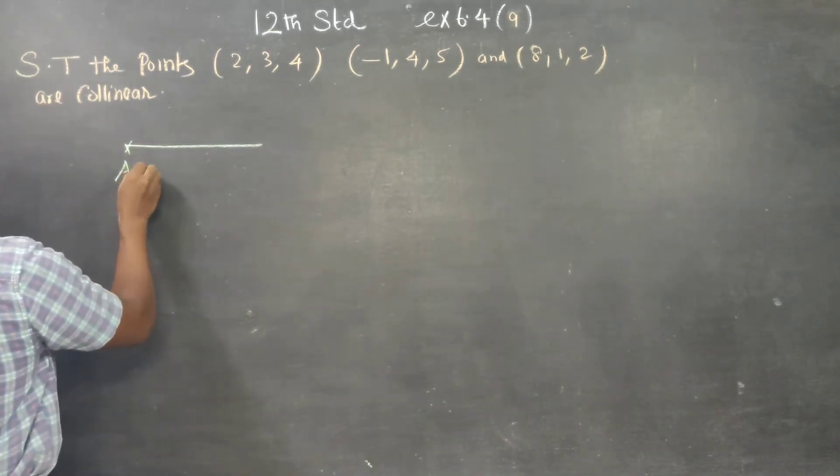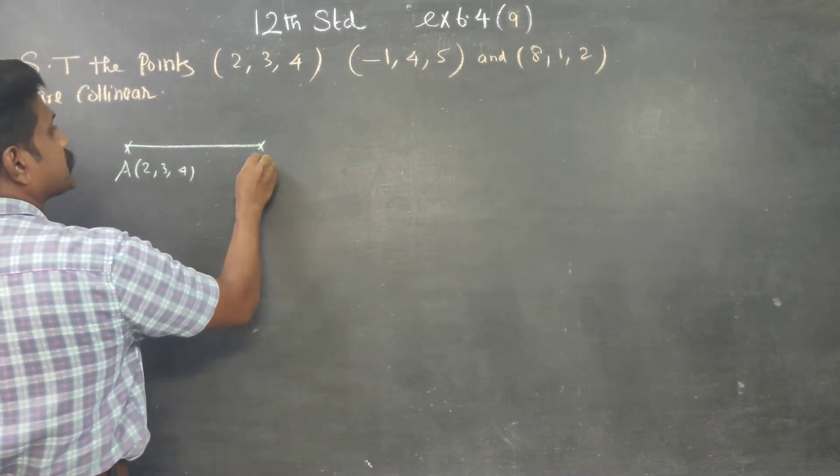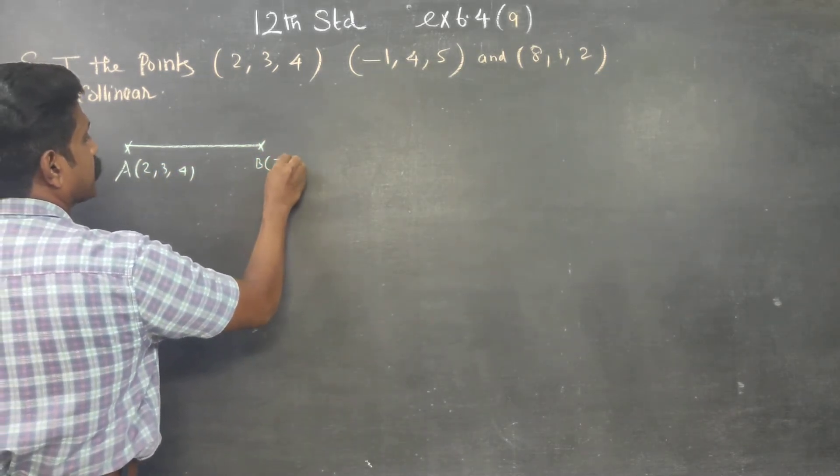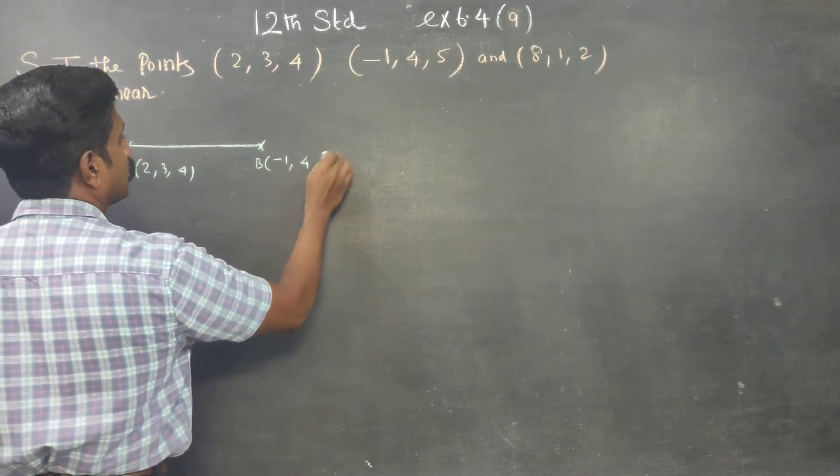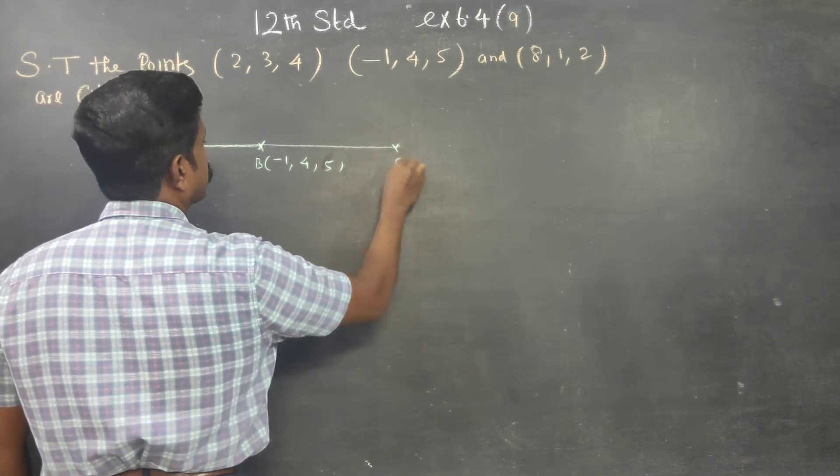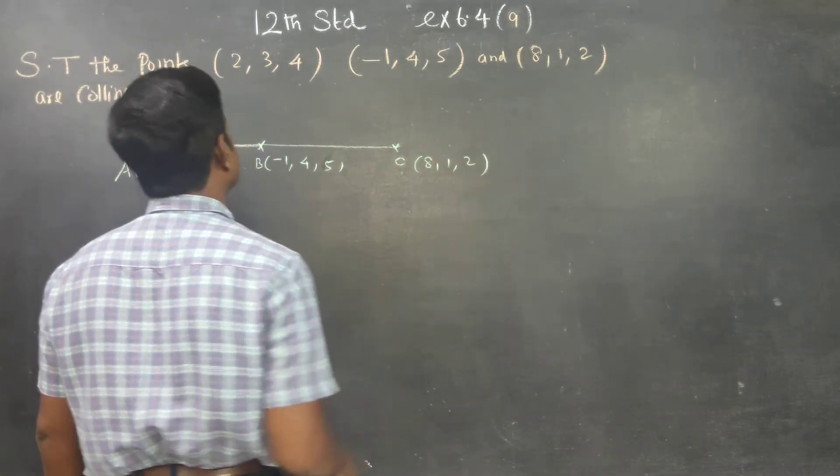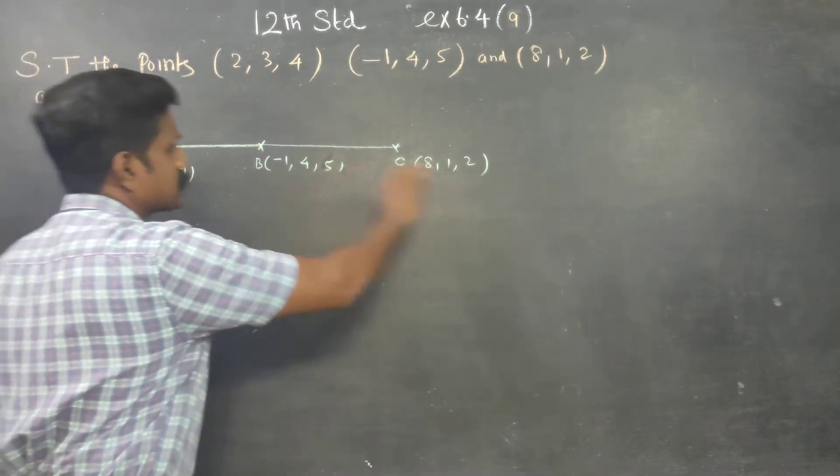Let my first point be 2, 3, 4. Let my second point be minus 1, 4, 5. And my third point be 8, 1, 2. I don't know whether these points are collinear.